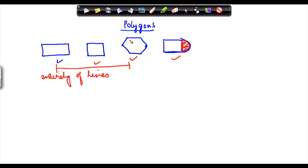So basically, a polygon is a figure which is made up entirely of line segments.